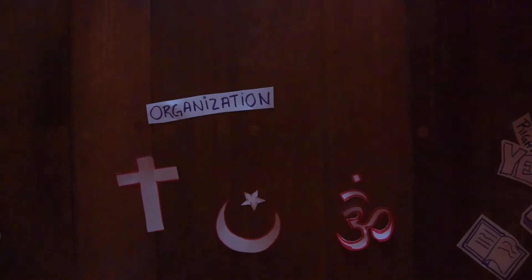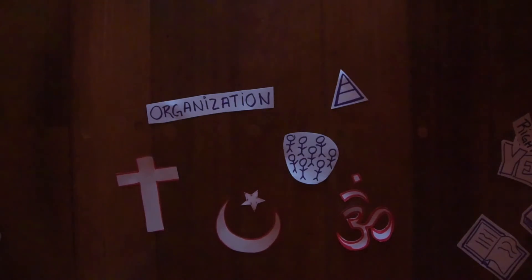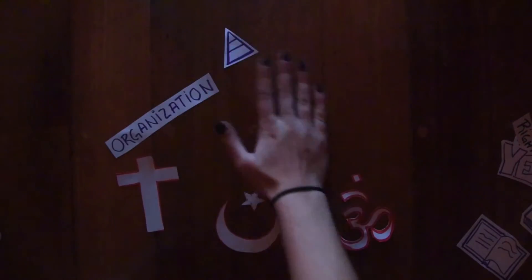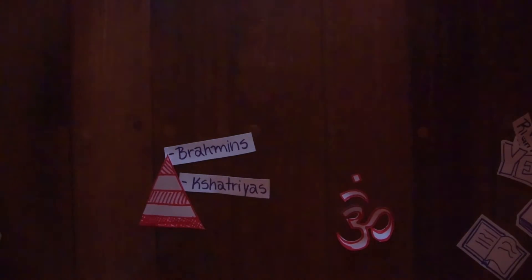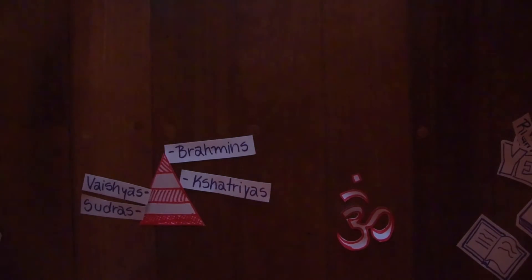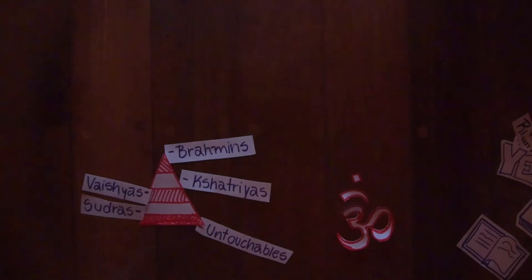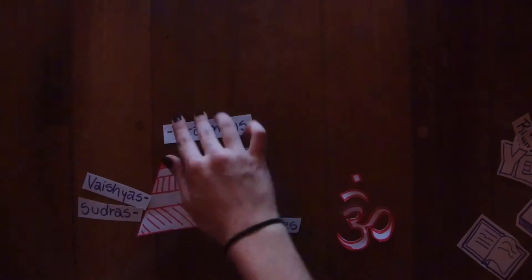Now onto the second question: does religion determine how societies are organized? Religion often plays a role in the establishment of social classes, either by providing religious justifications for why one is more or less favored, or by stating that the existence of different social and economic classes is just part of the natural state of human existence. For Hinduism, society is divided into different castes: the Brahmins, who are the priests; the Kshatriyas, who are warriors and rulers; the Vaishyas, who are merchants and landowners; the Sudras, who are the commoners, peasants, and servants; and the untouchables, the outcasts. This influenced India's own organization of social classes, and while the caste system is banned nowadays, the belief in a naturally born social class is still strong among a great part of the population.